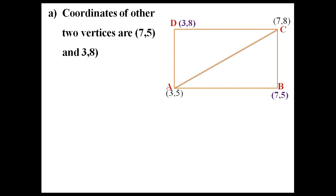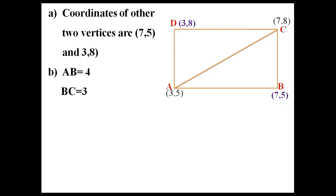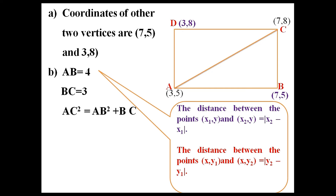Now let us draw the diagonal AC. Triangle ABC is right-angled and AC is its hypotenuse. To find the hypotenuse we need the lengths of AB and BC. The length of AB is the distance from (3, 5) to (7, 5), which is 4. And similarly the length of BC is 3. Therefore AC² = AB² + BC² = 4² + 3² = 16 + 9 = 25. Hence AC equals 5.